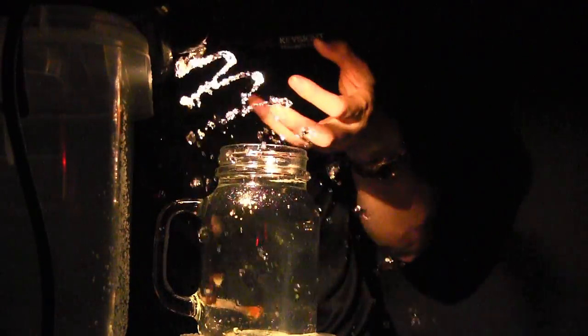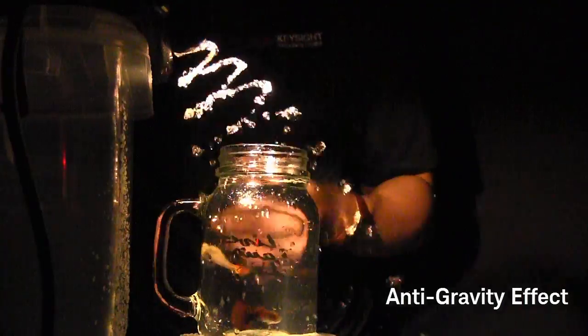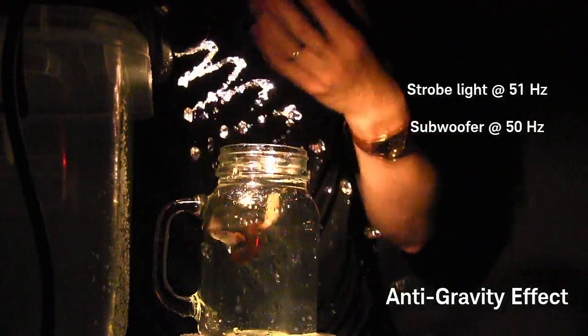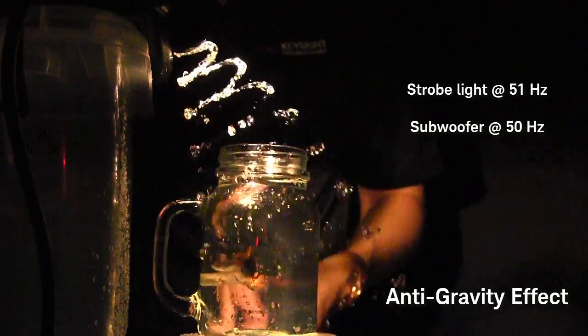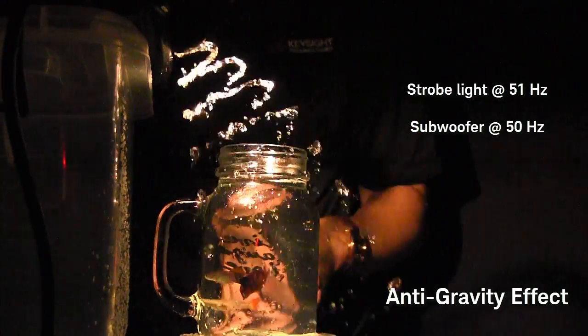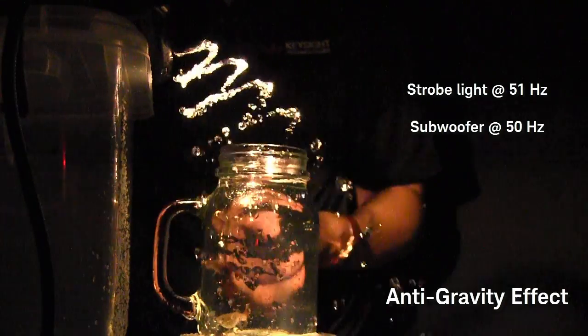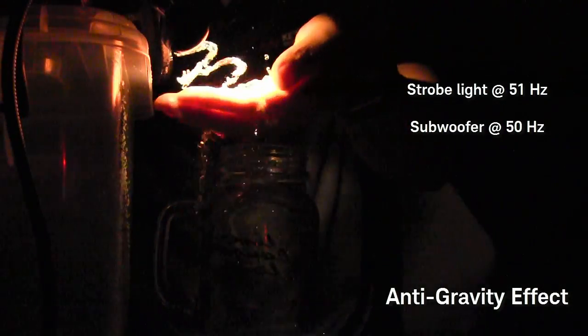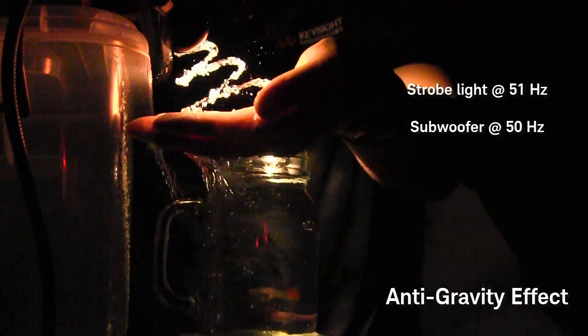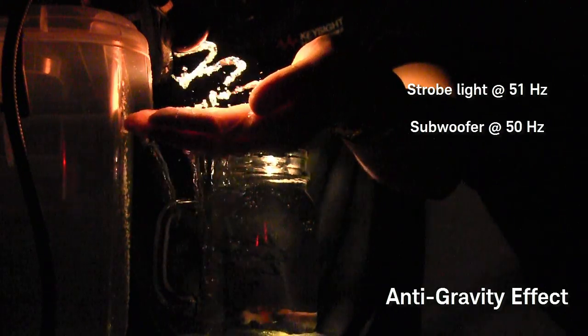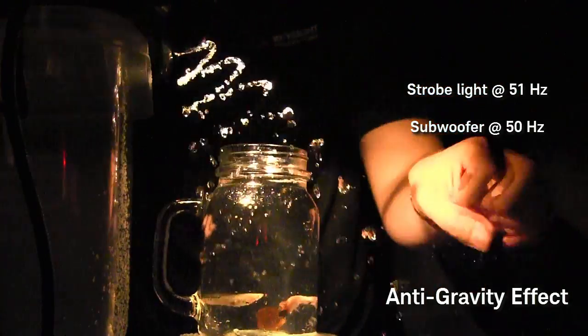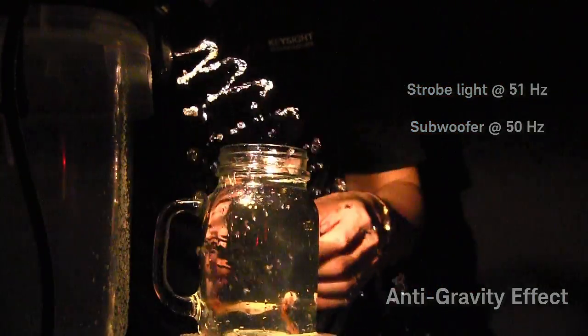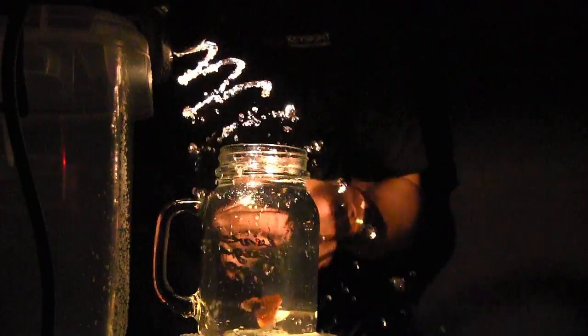If we change the strobe light to be a little bit faster than the speaker, so now the strobe light is at 51 hertz, it looks like the water is coming out. It's not a video effect. You can still see key and sight in the cup of water here, swimming around normally. If you wanted to, I could put my hand in the video, and you can actually see the water looking like it's coming out of my hands. So it's a neat little effect. But let's show you some other effects that we can do.